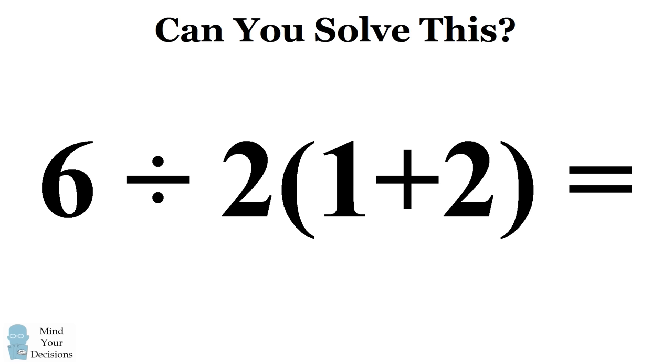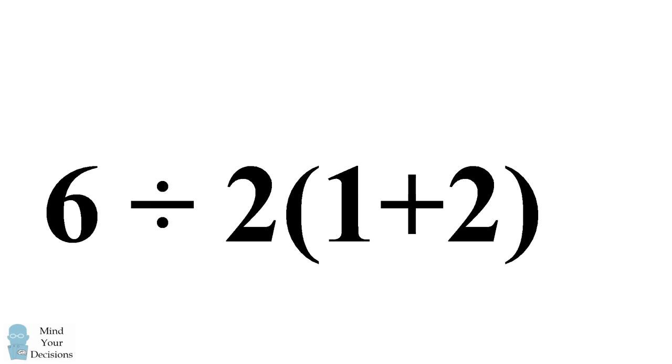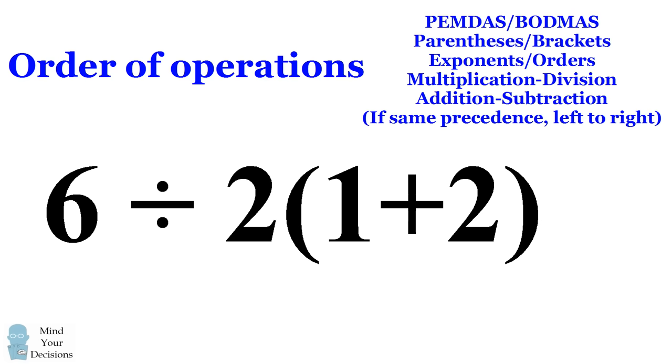In this video I'm going to present the correct answer. The problem is an example of the order of operations. These are commonly referred to as PEMDAS or BODMAS. This refers to evaluating the parentheses brackets, then the exponent orders, then multiplication and division, and finally addition subtraction. If you have two operations of the same precedence you want to evaluate them from left to right.